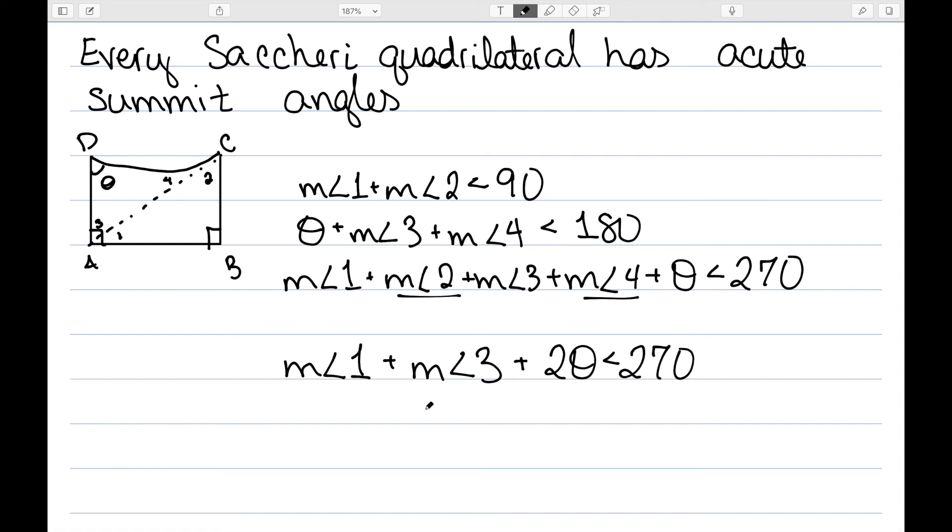We also know that angle 1 plus angle 3 is 90 degrees, so we have that 2 theta is less than 180, or theta is less than 90, which gives me that this would have to be an acute summit angle.